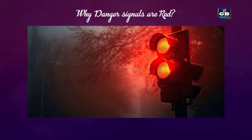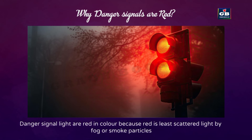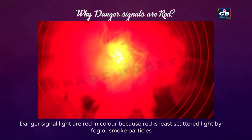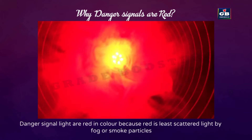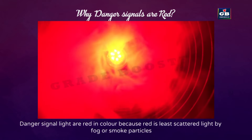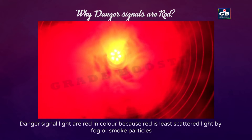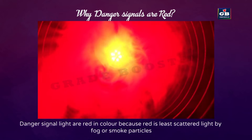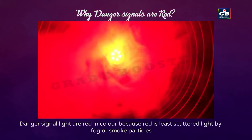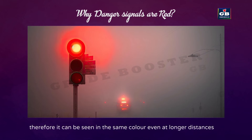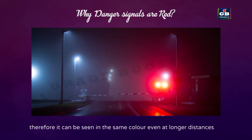Why are stop signals and danger signal lights red? Red is the least scattered light by fog or smoke particles. Because the wavelength of red light is longer, it is not easily scattered by dust particles and can therefore be seen in the same color even at large distances. That's why red color is used for danger signals.